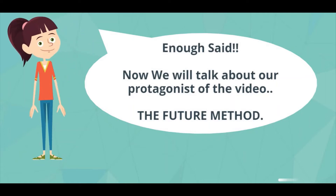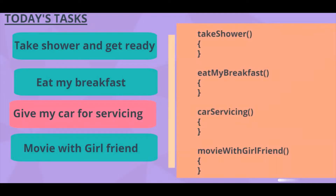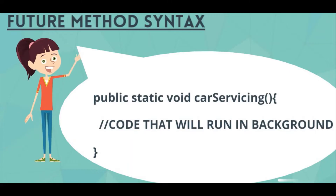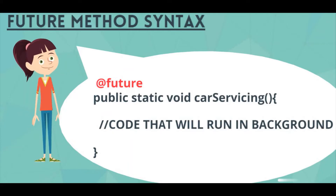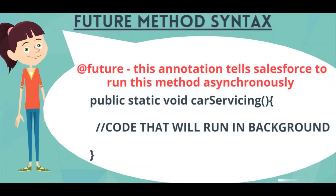Now we'll talk about the protagonist of the video: the future method. A future method is a set of code that runs in the background. It is basically like any other method. If we map our four tasks to Salesforce: taking a shower is a method, eating breakfast is a method, car servicing is a method, and movie with girlfriend is a method. But I want the car servicing method to run asynchronously and in the future. So if we want to make any method run in the future, just annotate that method with the @future annotation. If we give a method the @future annotation, Salesforce will understand that this method has code which needs to run in the background and will move it into a separate thread.